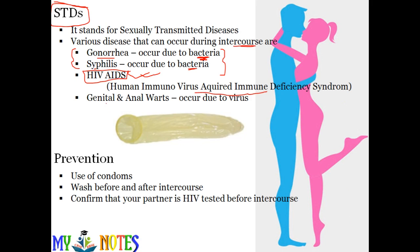Another STD is genital and anal warts, which occur due to viruses. These different viruses can affect your genital areas and anus. Maintaining proper cleanliness is very important — while having sex, you should maintain proper hygienic conditions.